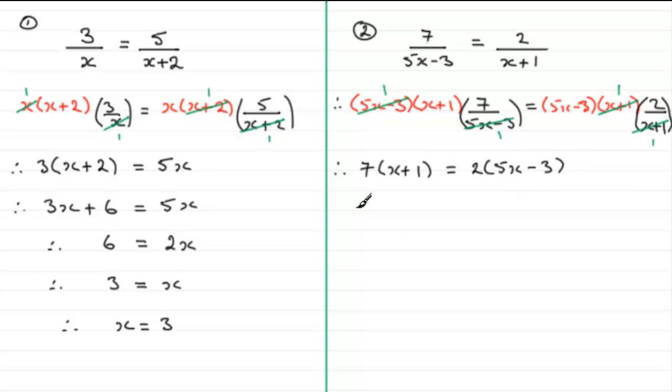And we can expand the brackets. And if we expand the brackets, we've got 7x plus 7 equals 10x minus 6.